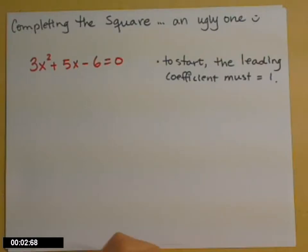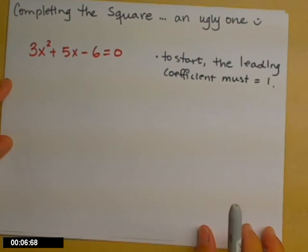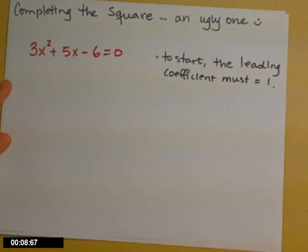So now let's use completing the square to solve a problem that's not so nice. 3x squared plus 5x minus 6 equals 0.